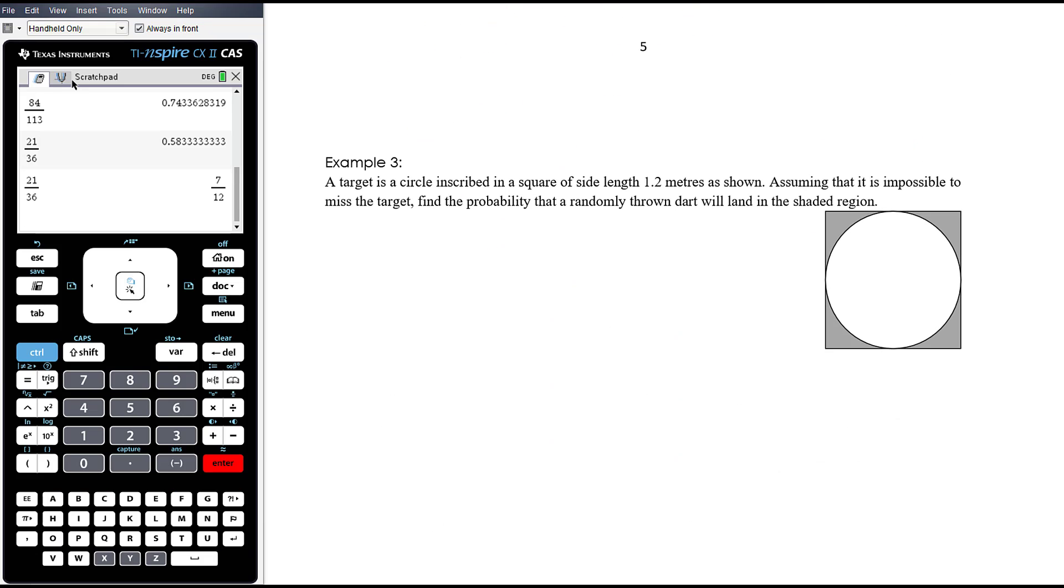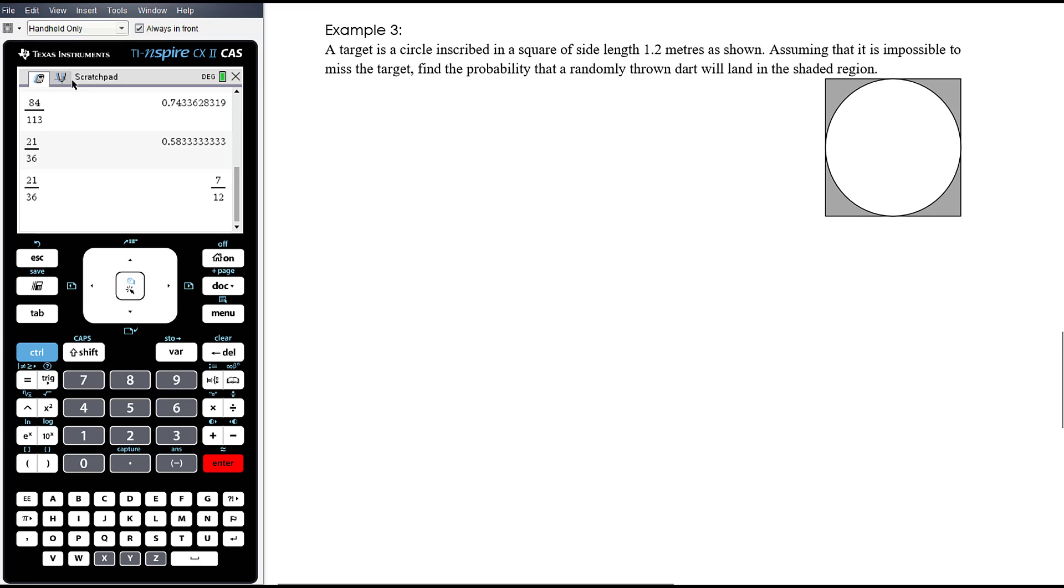Example three. A target is a circle inscribed in a square of side length 1.2 meters as shown. It doesn't show any dimensions, but 1.2 meters and it's a square. Assuming that it's impossible to miss the target, so you have to hit somewhere on the square, find the probability that a randomly thrown dart will land in the shaded region.